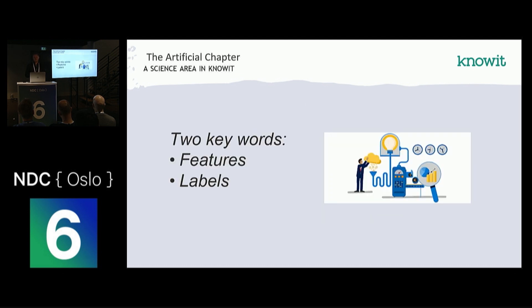Before we get to the really good stuff, I need to explain two key terms in machine learning. You have something called features — basically a property of your training data. And a label is the output you get from your model after training it. Features are input, labels are output, though you can also have labels on your input data. For example, if you want a machine learning algorithm to estimate the height of a person based on age and gender, then age and gender are features, and the height you want to find is the label. If you have a training set with many people and their heights corresponding to age and gender, then you have a labeled training set.